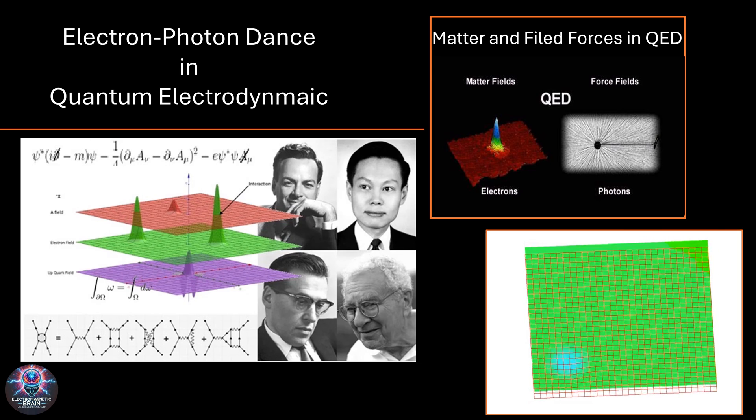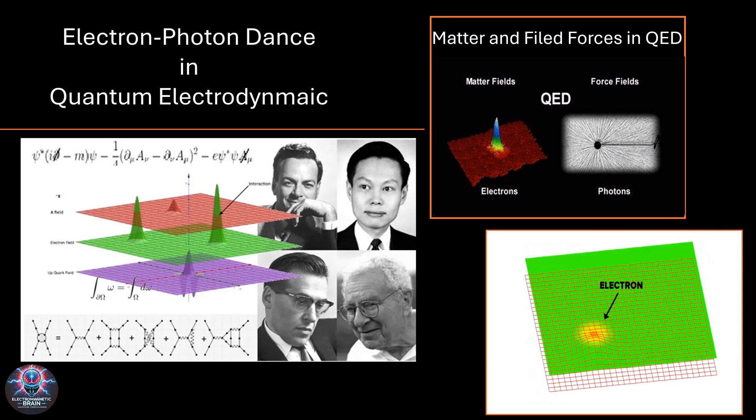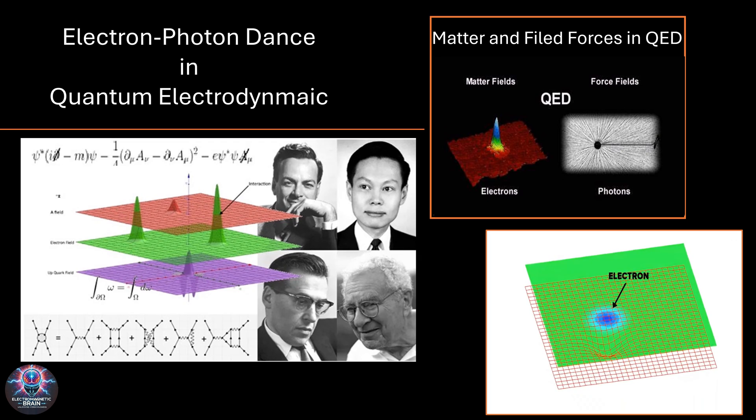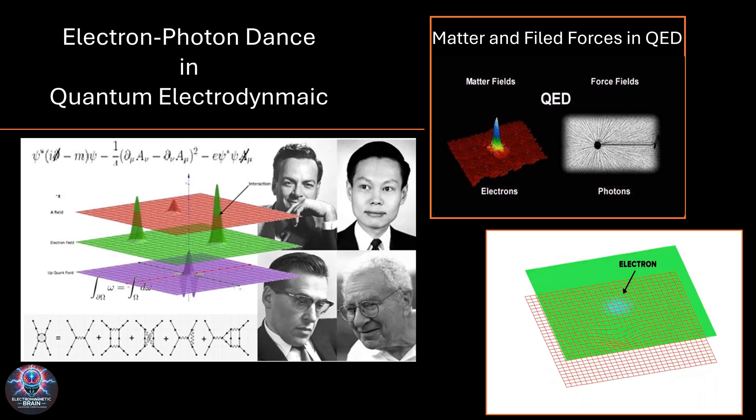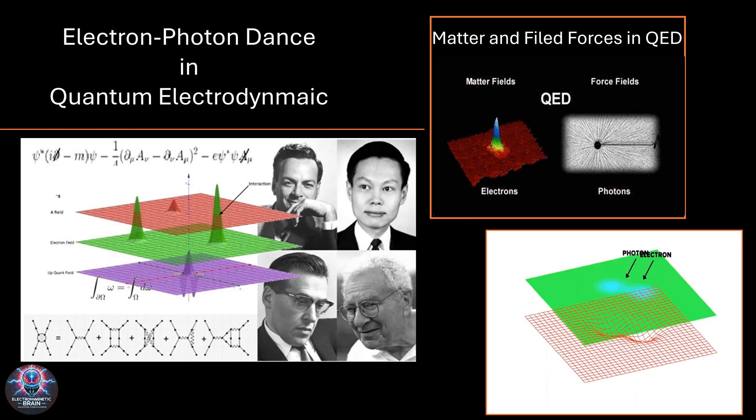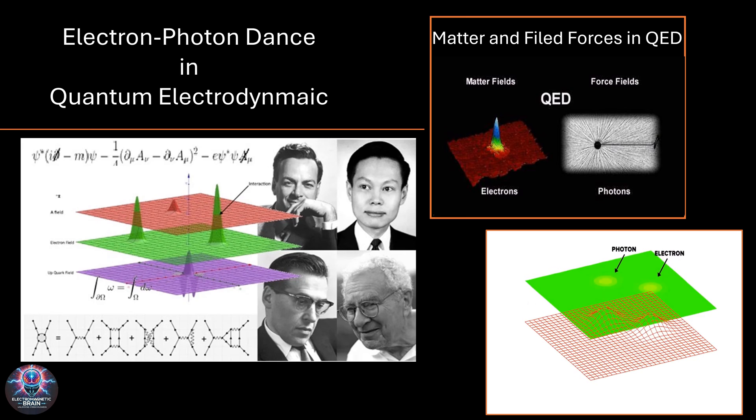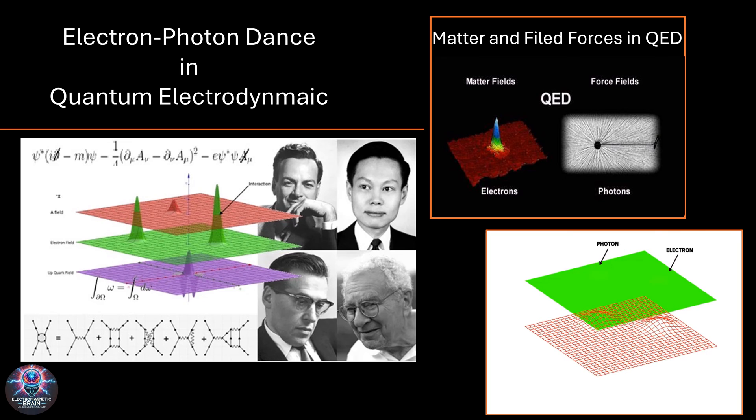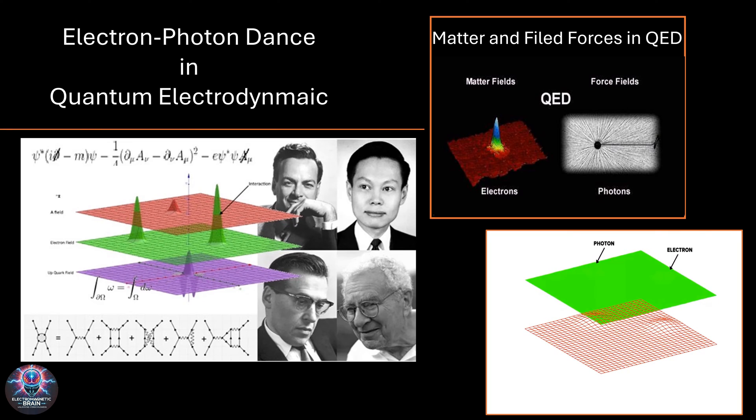Alright. Now let's dive into one of the most fascinating dances in the quantum world, the interaction between electrons and photons in quantum electrodynamics, or QED. At its core, QED describes how light and matter interact at the most fundamental level. This incredible theory was developed and refined by brilliant minds like Richard Feynman, Julian Schwinger, and Sinichiro Tomonaga, as you can see in the images here. They revolutionized our understanding of how charged particles like electrons exchange photons, the force carriers of electromagnetism, to create the world we observe.